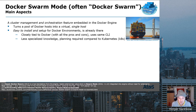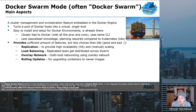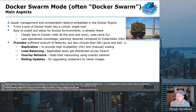Docker Swarm is closely tied with Docker, with all the pros and cons that come with it. It uses the same command-line interface and requires less specialized knowledge or planning ahead compared to Kubernetes. It provides a sufficient amount of features, but obviously far fewer choices than Kubernetes — which can be good or bad depending on your environment, requirements, or even your workload.